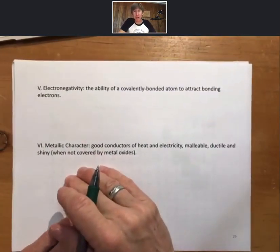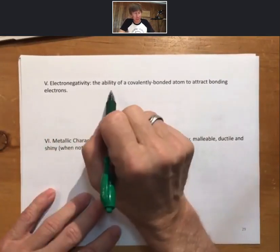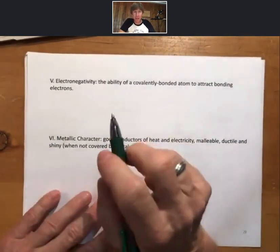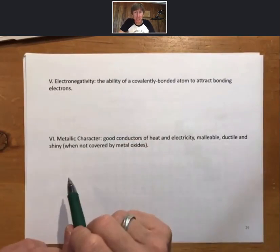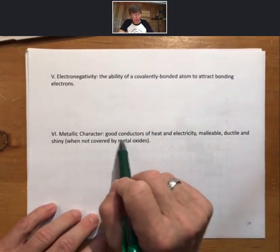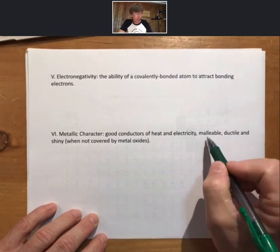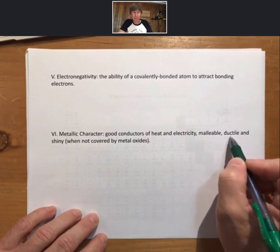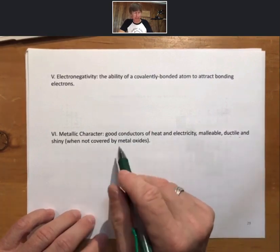Now, we're going to run through a couple more terms. We're almost done here. Hold on. Electronegativity, the ability of a covalently bonded atom to attract bonding electrons. You do have to know that definition, even though we haven't talked about bonds yet, because it will help you as we come to the next lecture outline. Metallic character, good conductors of heat and electricity, malleable, ductile, so malleable can be bent, ductile can be made into thin sheets, and shiny when not covering metal oxides. All right.